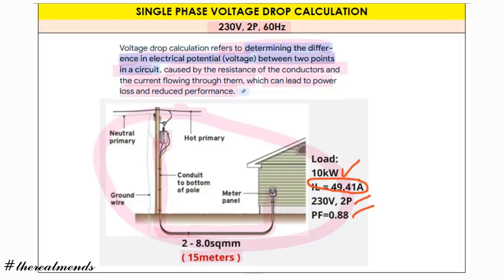The estimated length from the secondary transformer is 15 meters, and the conductor is 2 × 8.0 square mm. We have the neutral, primary, and ground wire in conduit. We are measuring the voltage drop from the transformer down to the meter panel.